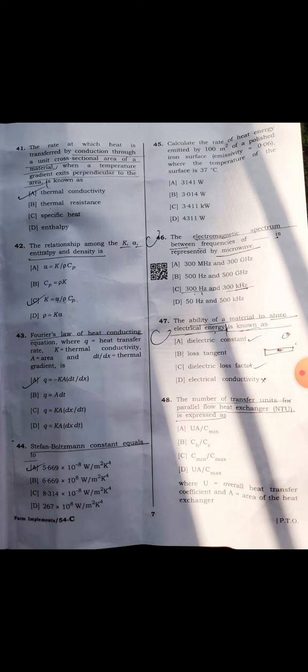Forty-fourth: Stefan-Boltzmann constant equals 5.67 times 10 to the minus 8 watt per meter square K to the power 4.